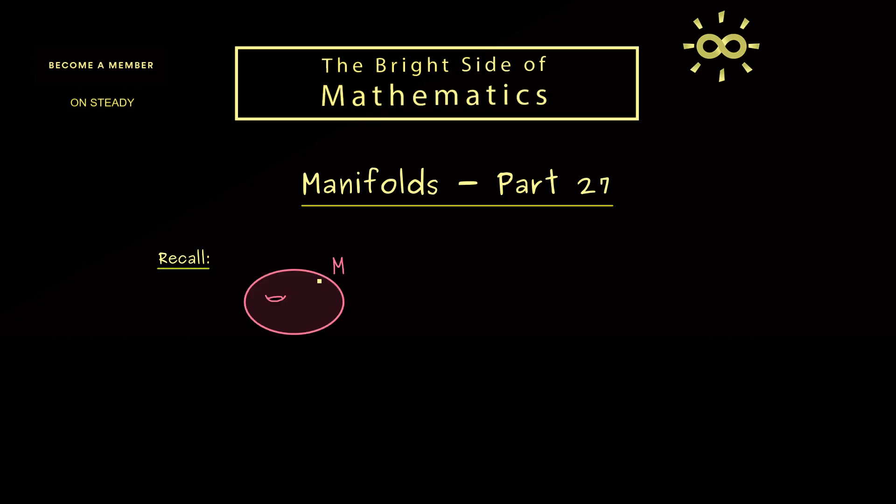In particular, every time we write M, we mean a differentiable manifold. Therefore, the tangent space at a given point p always exists. And the name for the tangent space is always T_pM. And now if M is an n dimensional manifold, the tangent space is an n dimensional vector space.